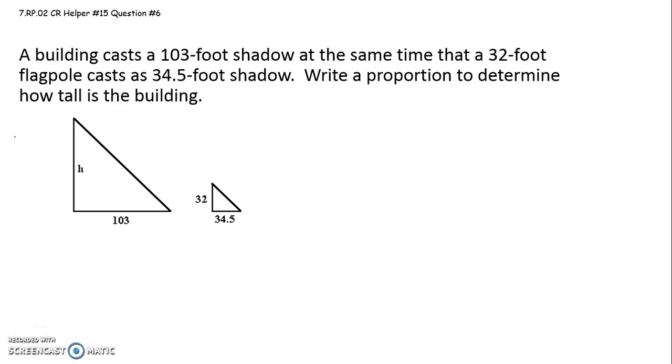Alright, eighth graders, this is to help you with question six on CR 15. It says a building casts a 103-foot shadow at the same time of day a 32-foot flagpole casts a 34.5-foot shadow. Write a proportion to determine how tall the building is.